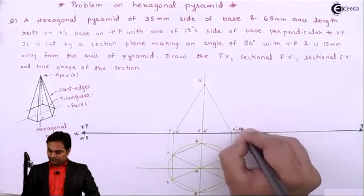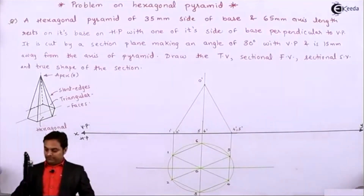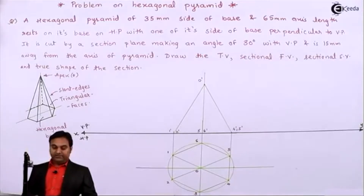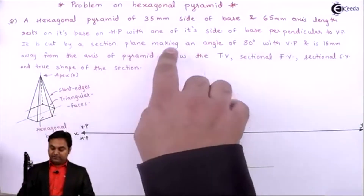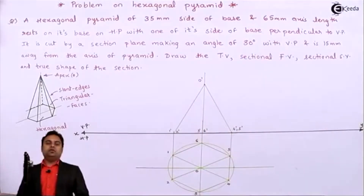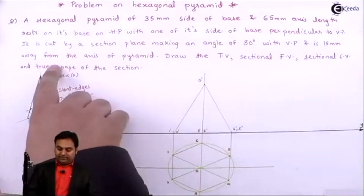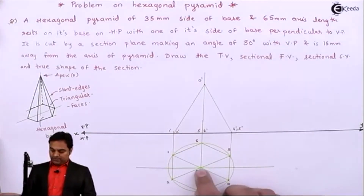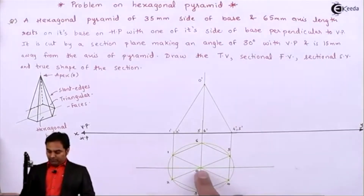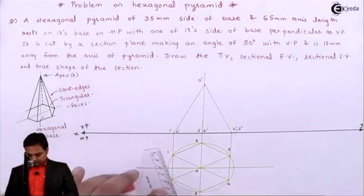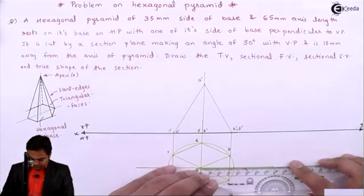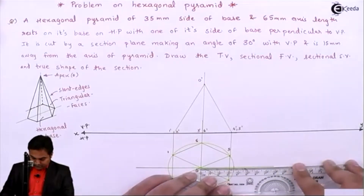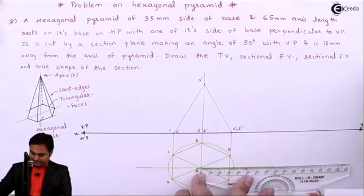After getting the front view of the hexagonal pyramid, I have to place the cutting plane. It is cut by a section plane making an angle of 30 degrees with VP. This angle of 30 degrees with VP will be seen in HP and is 15 mm away from the axis of the pyramid. The axis of the pyramid appears in the top view in the form of a point.